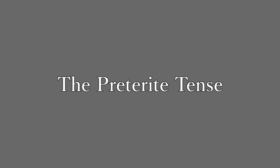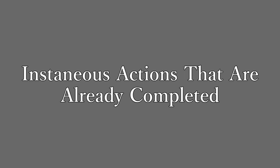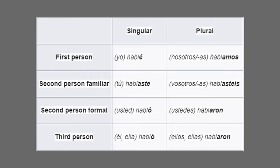Next up, we have the past tense. Spanish actually has two ways to express events in the past. The first is the preterite, which describes actions that were instantaneous and already completed. Using the verb hablar: yo hablé (I spoke), tú hablaste (you spoke), usted habló (you spoke formally), él/ella habló (he/she spoke), nosotros hablamos (we spoke), vosotros hablasteis (you all spoke), ustedes hablaron (you all spoke), ellos/ellas hablaron (they spoke). An example: yo hablé con mi madre — I talked with my mom.